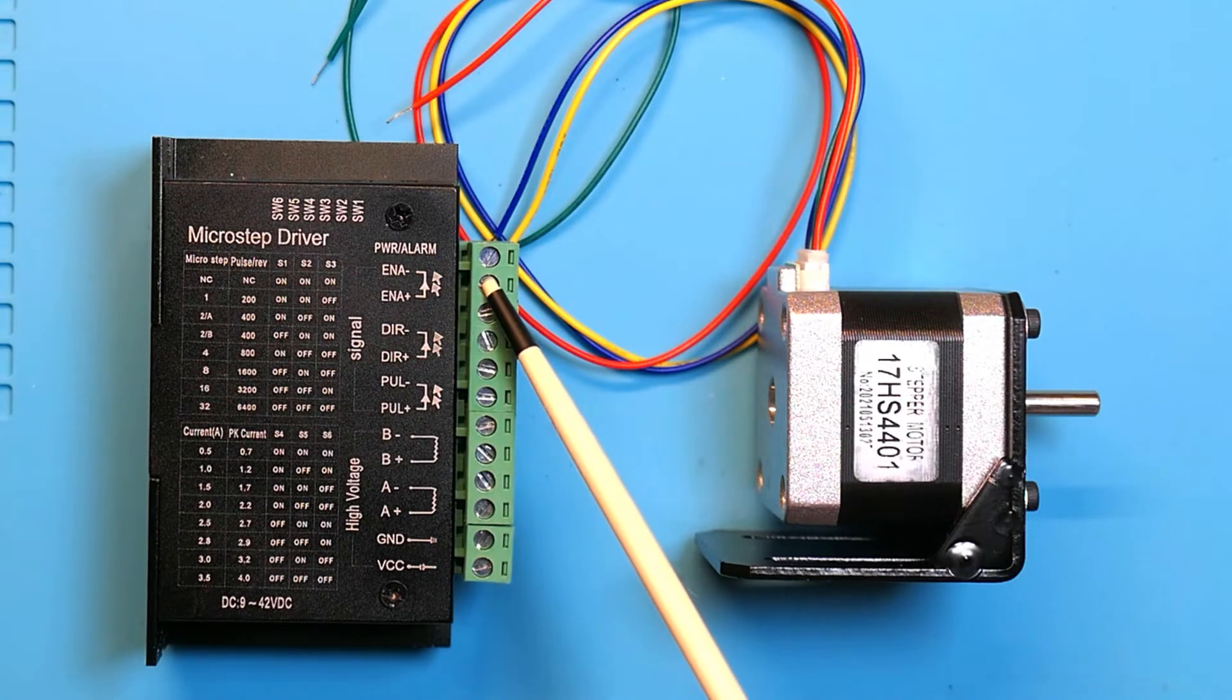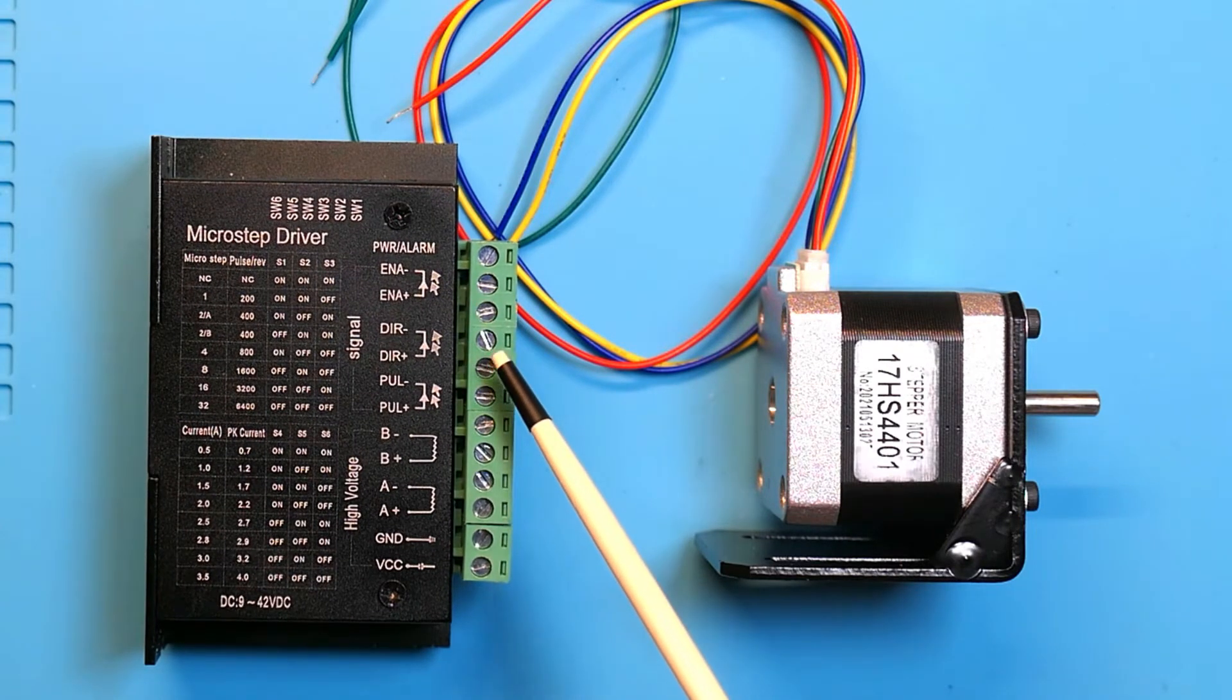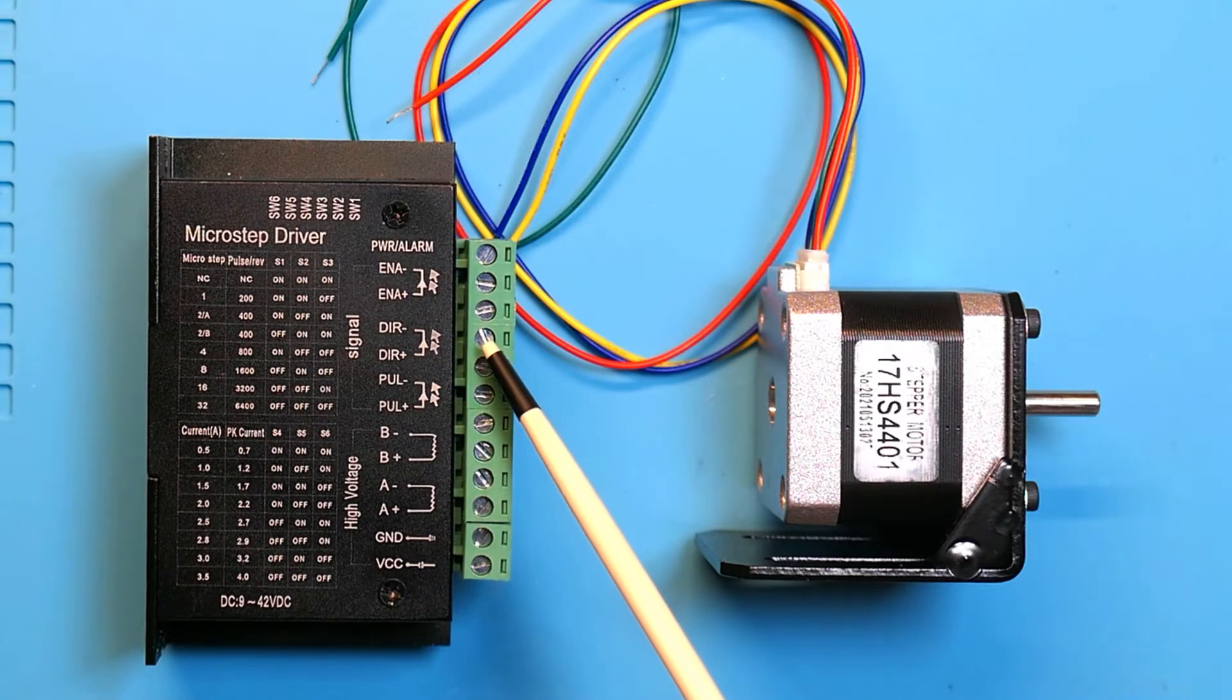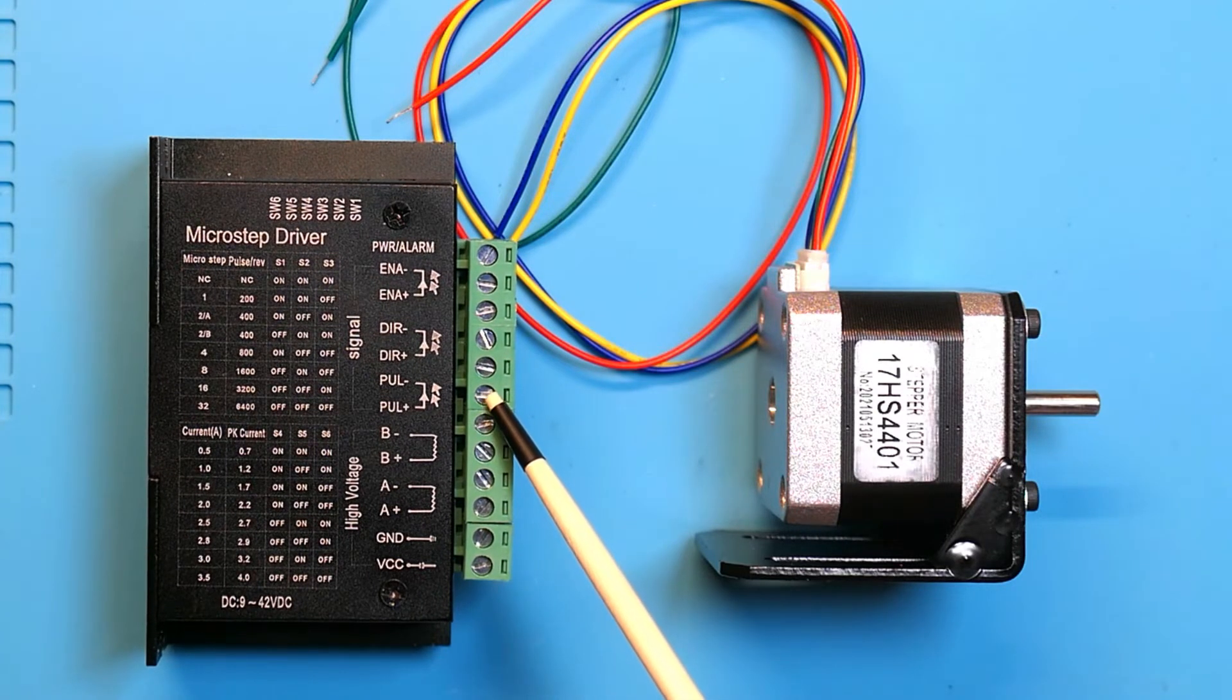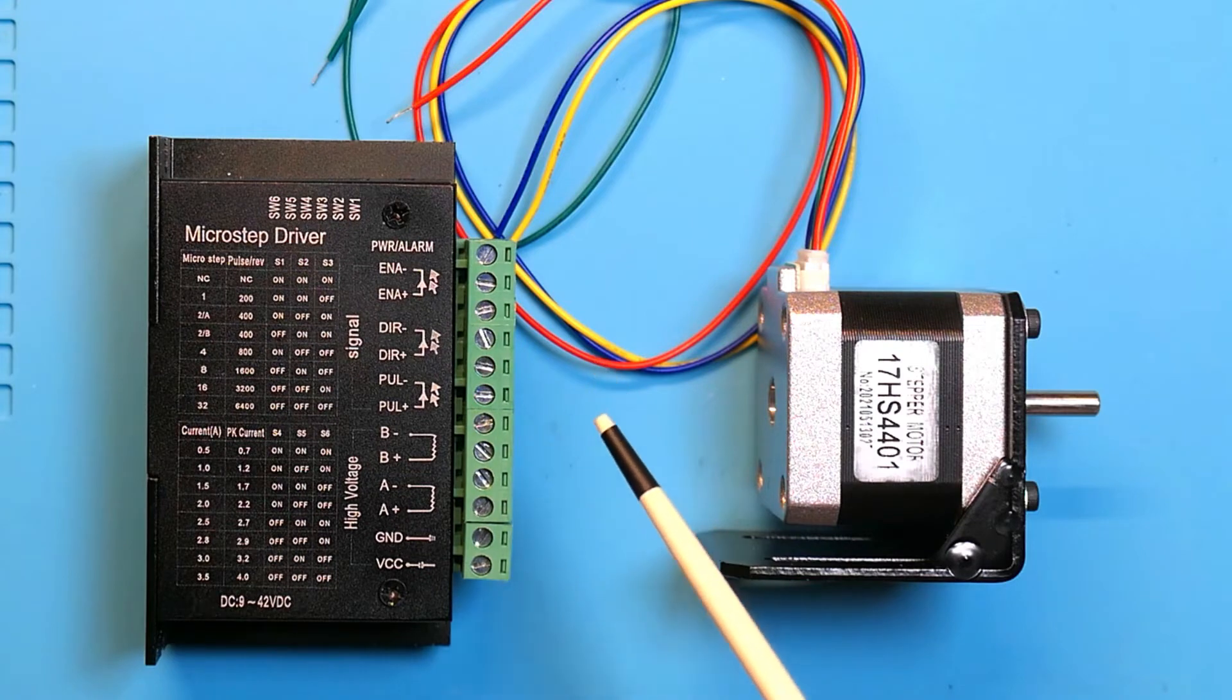And then it has these three inputs from your microprocessor, and they're isolated so you don't have to worry about the current that these are drawing. It has an enable pin, has a direction pin where you can change the direction of the motor, and then the actual pulses that are going to move the stepper motor one step each time it gets another pulse.